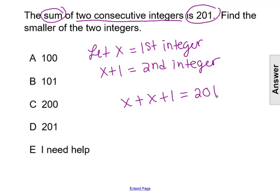That's our equation that now lets us solve for x. So solving for x, we'll combine our like terms. We'll have x plus x is 2x, so 2x plus 1 equals 201.